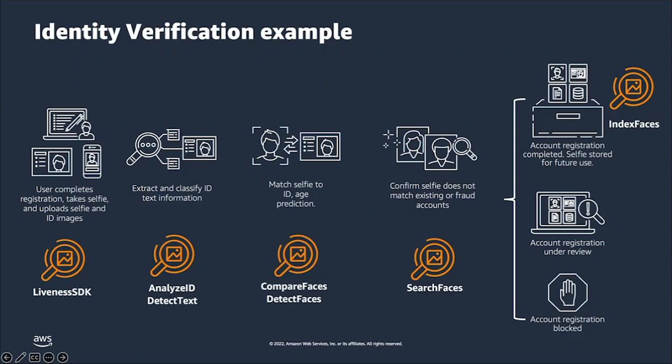The next step commonly seen in identity verification is a one-to-one face match comparison — our Compare Faces API. In this scenario, the bank can take a frame from the liveness video that was captured, and the photo of the person from their uploaded ID, and send those two images to Rekognition Compare Faces, which will return a confidence score on whether or not those two faces match.